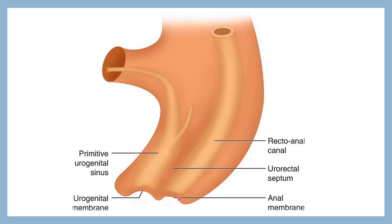Behind the perineal body, backward growth and proliferation occur, producing an anal pit. The mesenchymal cells proliferate around this proctodeum, separating the anal part from the urogenital membrane. The anal pit becomes canalized, forming the anal canal, which communicates with the rectum. So the anal canal is formed from two sources: one from the endodermal source and another from the ectodermal source.